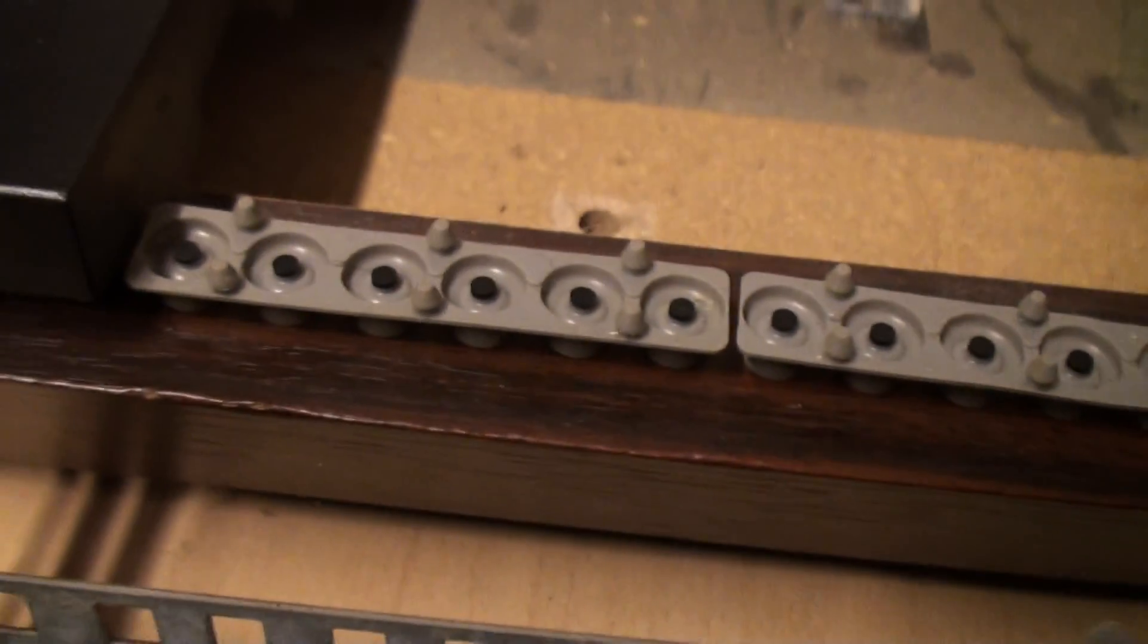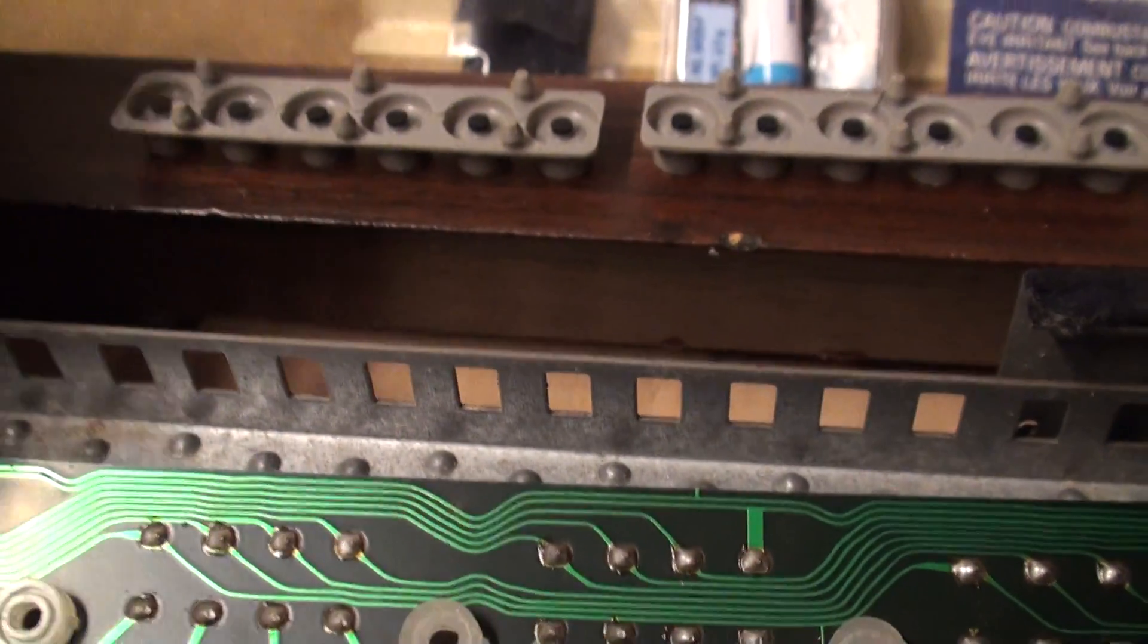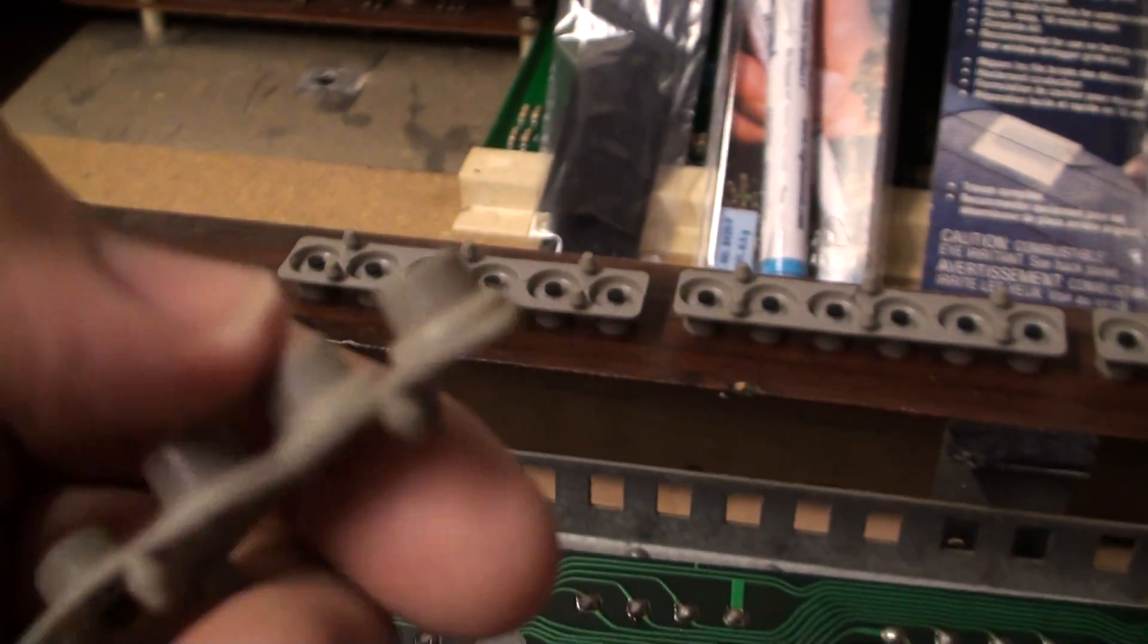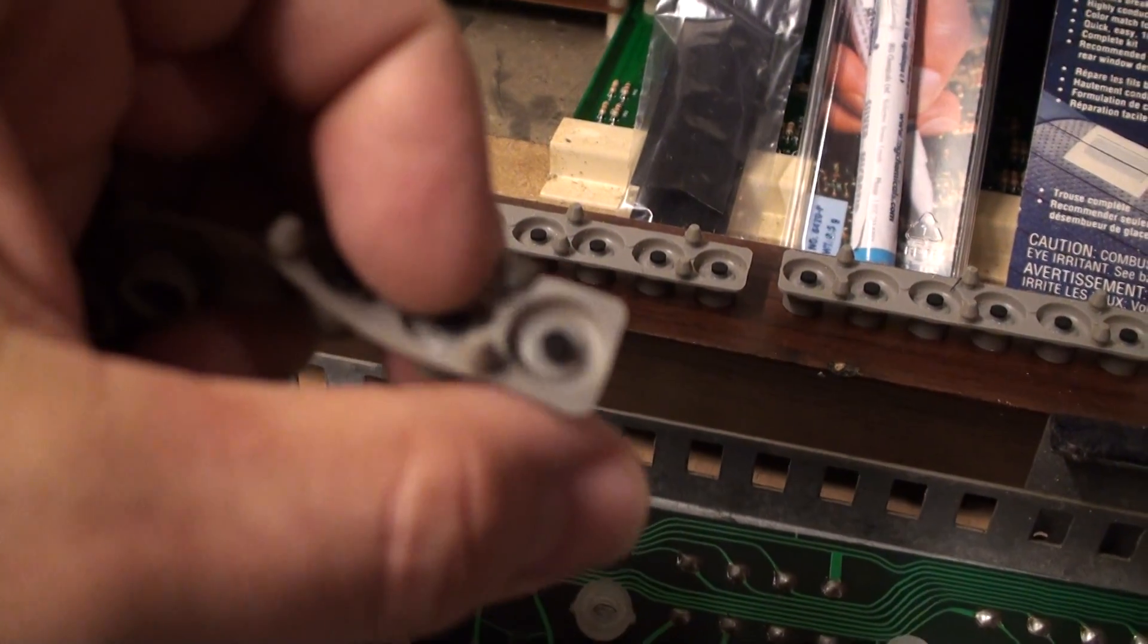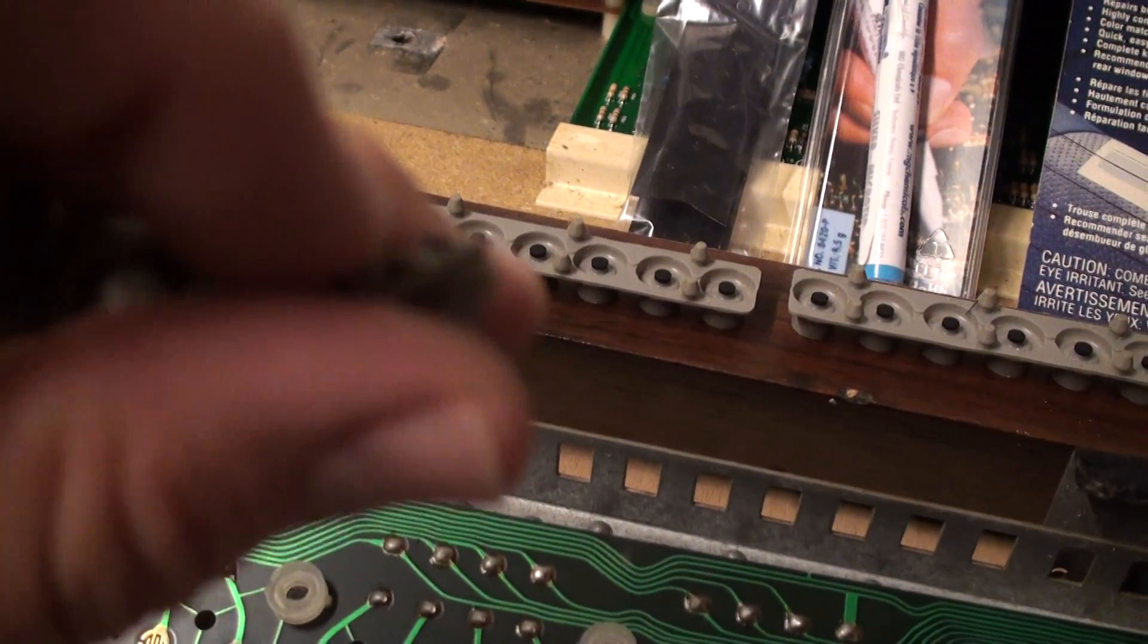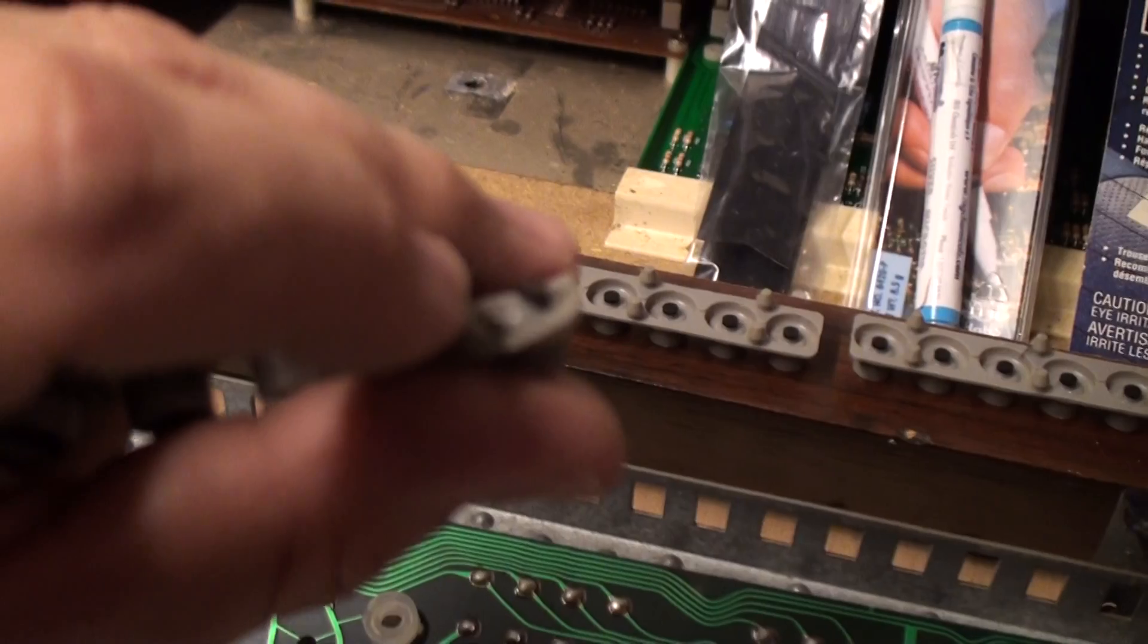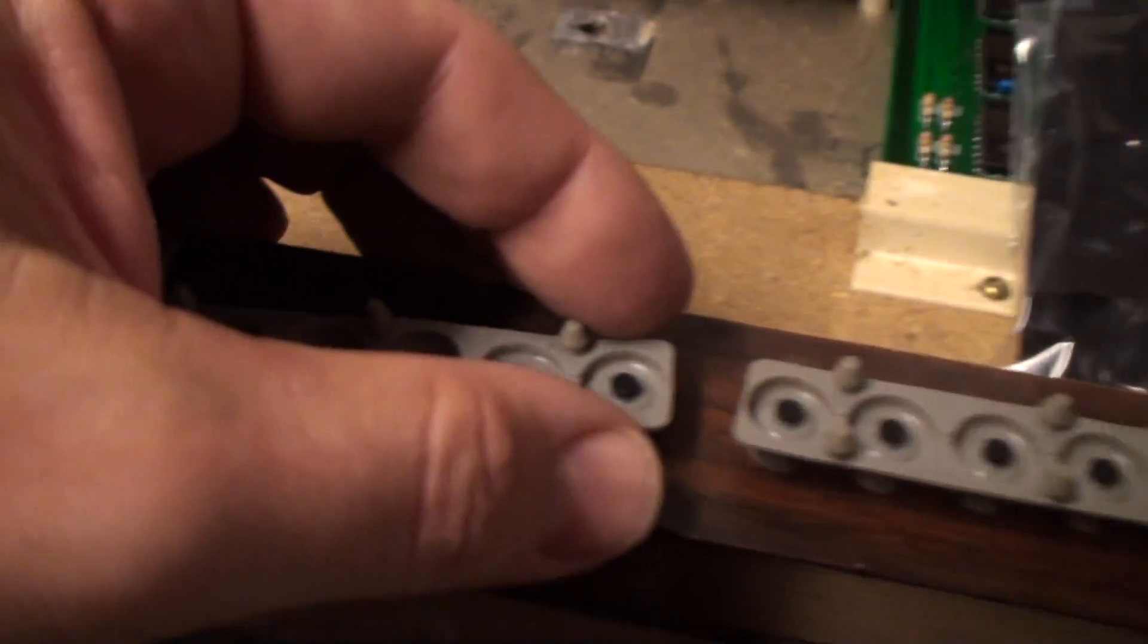There's the rubber domes right there. So these are the rubber strips with the little dome inside, as you can see. They look like this from the top, and the key presses down. Let me see if I can give you a better view of that.